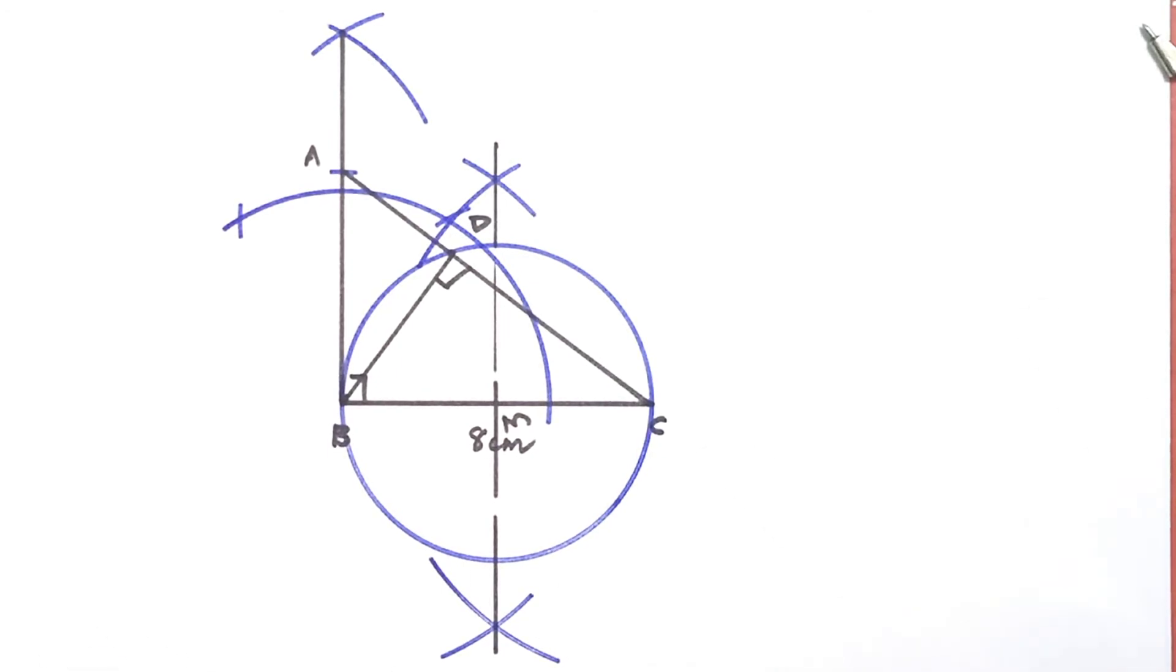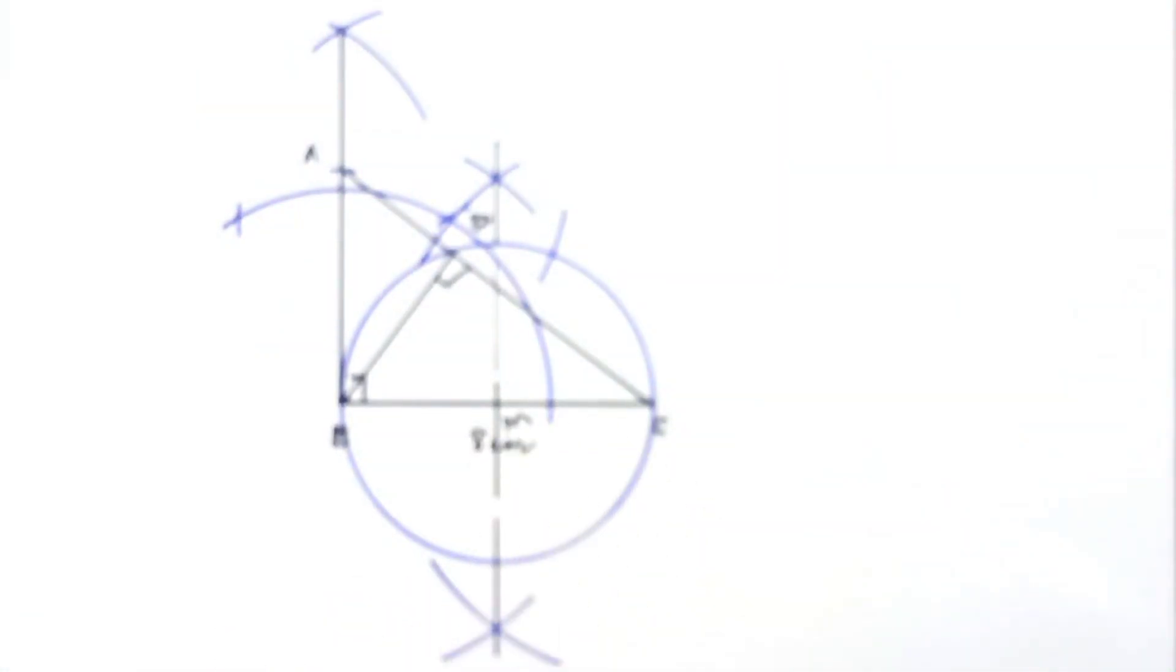By theorem 10.2, we know the lengths of tangents are equal from the external point. So we can draw another arc from A with AB as radius.